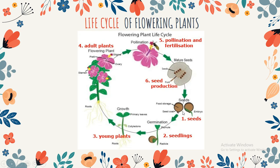Stage one: Seeds. We can think of seeds as the first stage in the life cycle of the flowering plants. With the right conditions such as water and warmth, seeds will start to grow. When that happens, we say they have germinated. Germinated means terkecambah. The flowering plant will first grow roots and shoots.